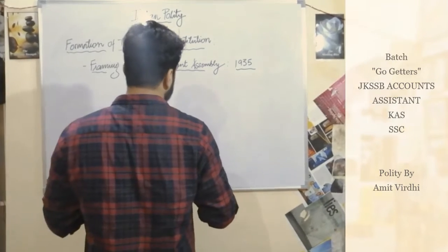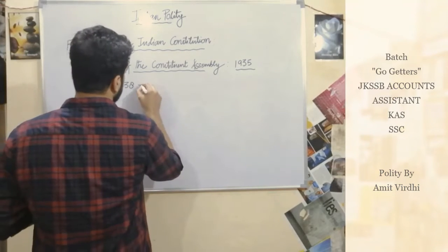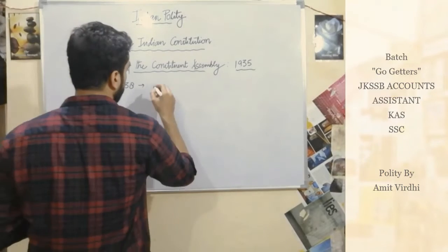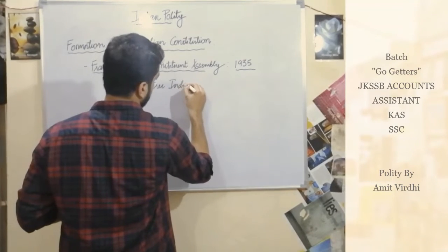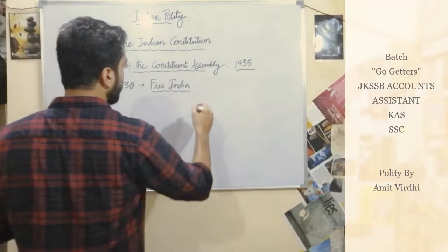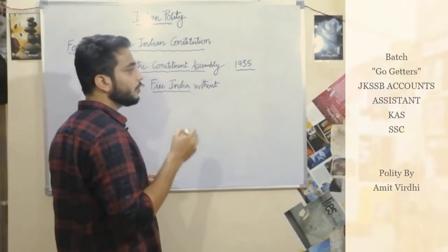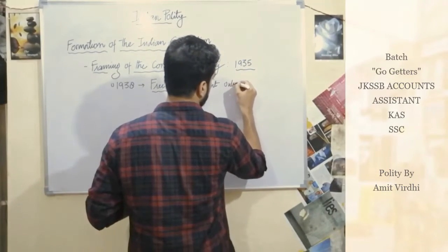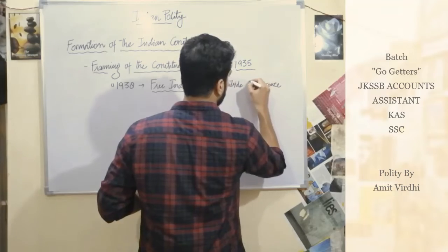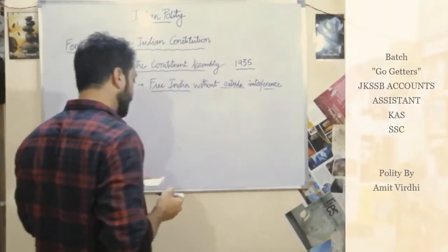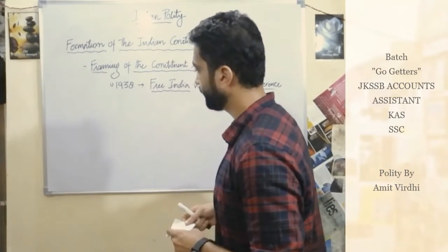In 1938, Jawaharlal Nehru declared that the constitution of a free India would be drafted by Indians themselves. India would have an official document, a blueprint, with no outside interference — meaning the British would have no interference. The constitution would be made by the people of India alone, and they would participate in this process.